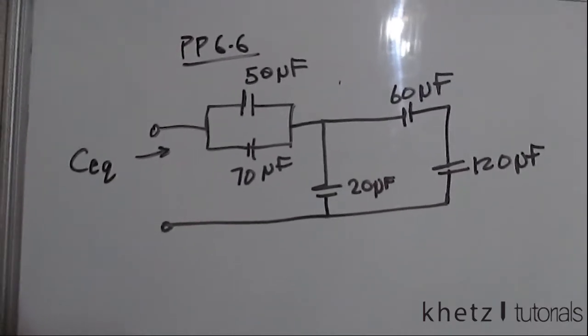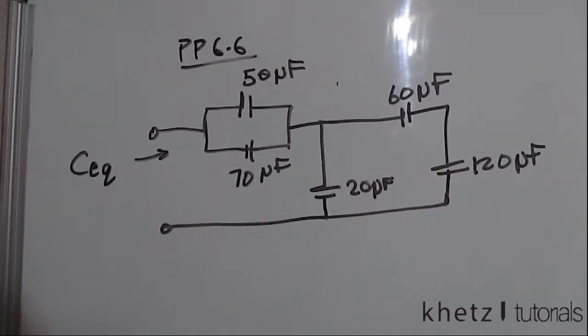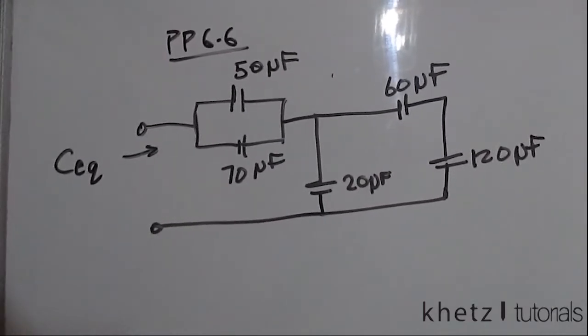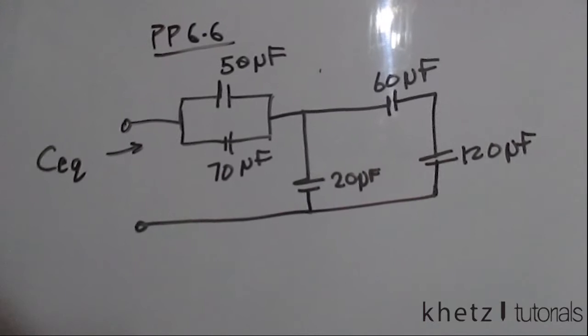Welcome to CATS Tutorials and in this video I'll be covering practice problem 6.6. In this question we're asked to find the equivalent capacitance as seen from the terminals of the circuit.